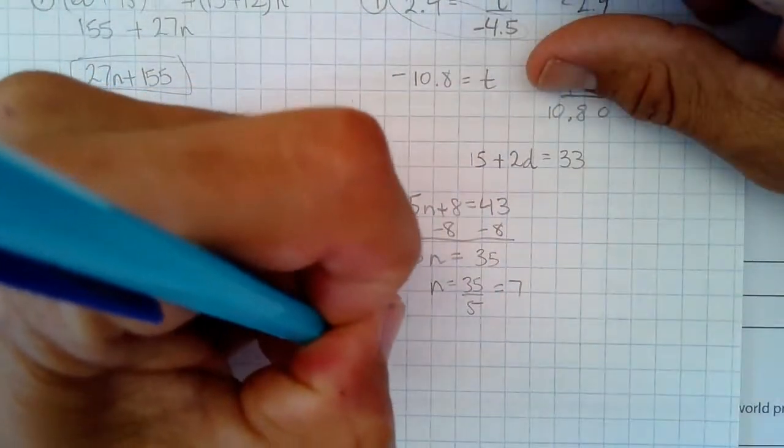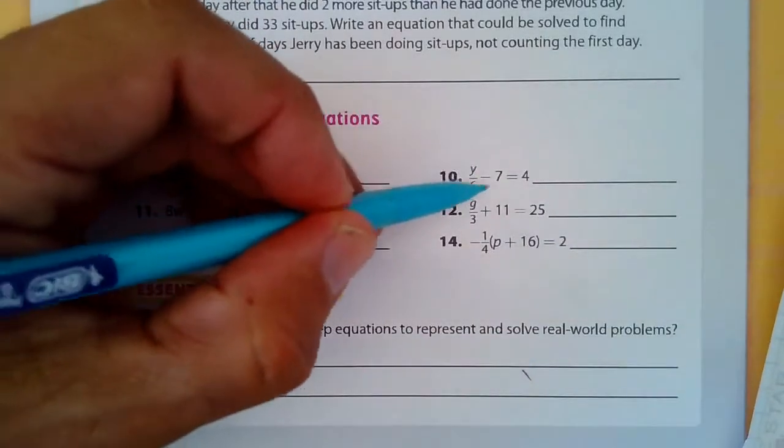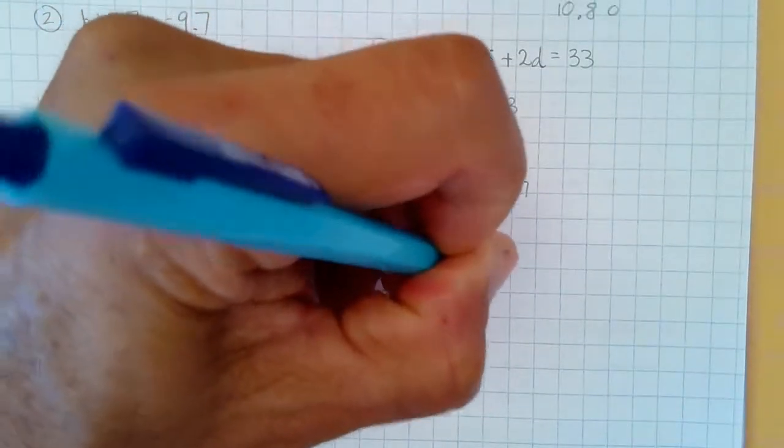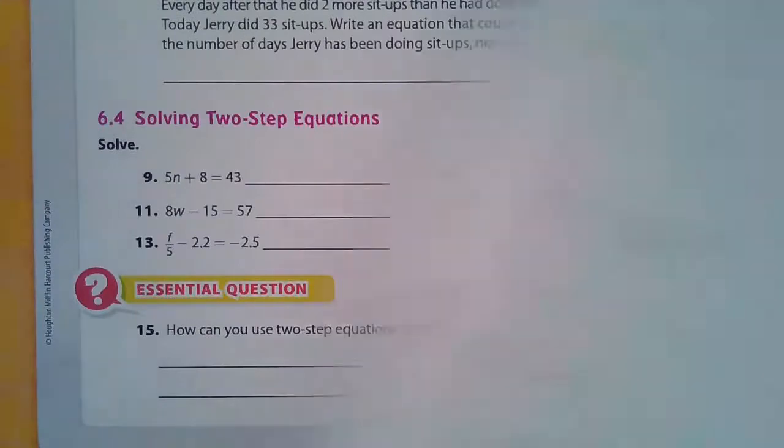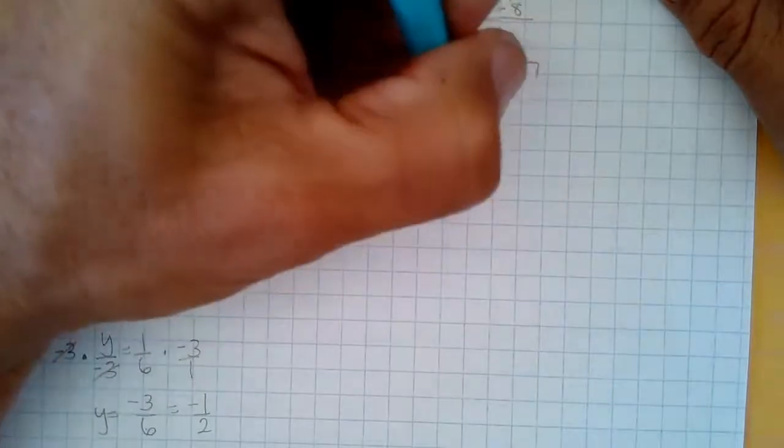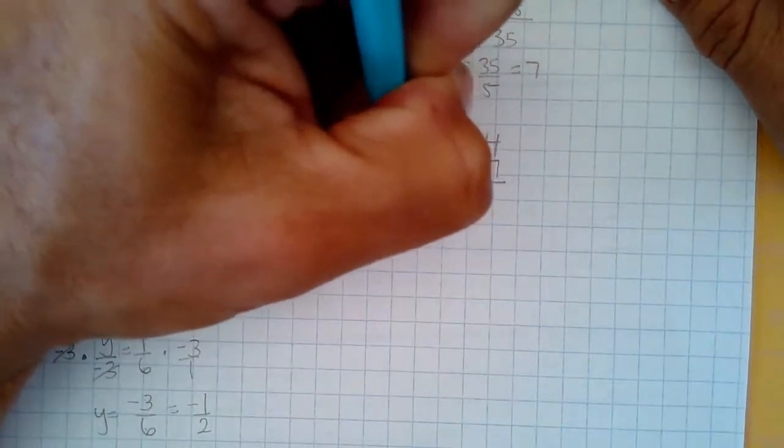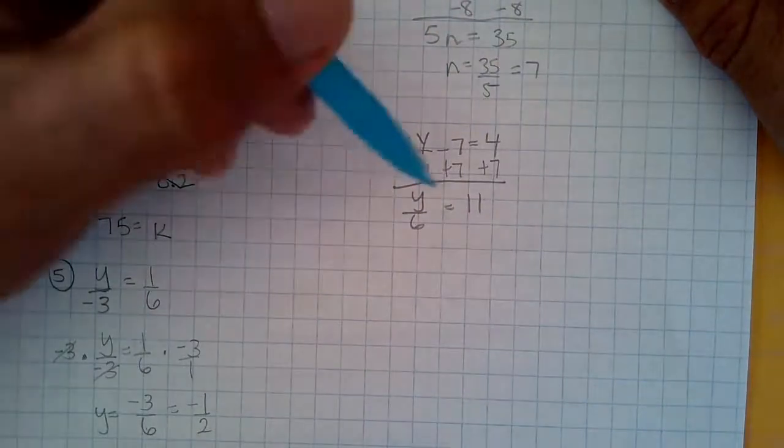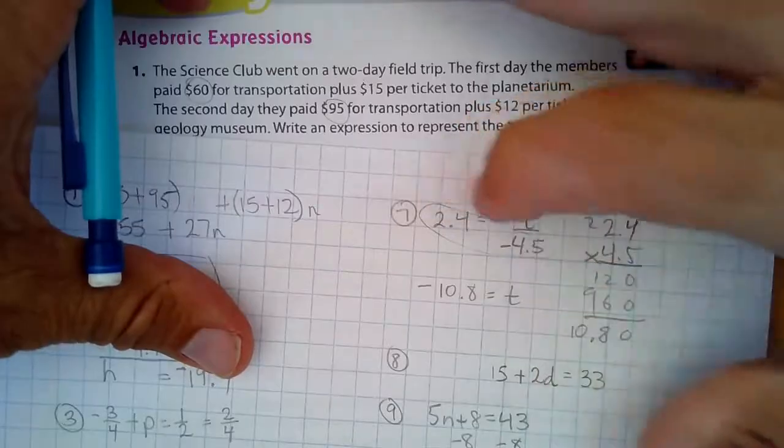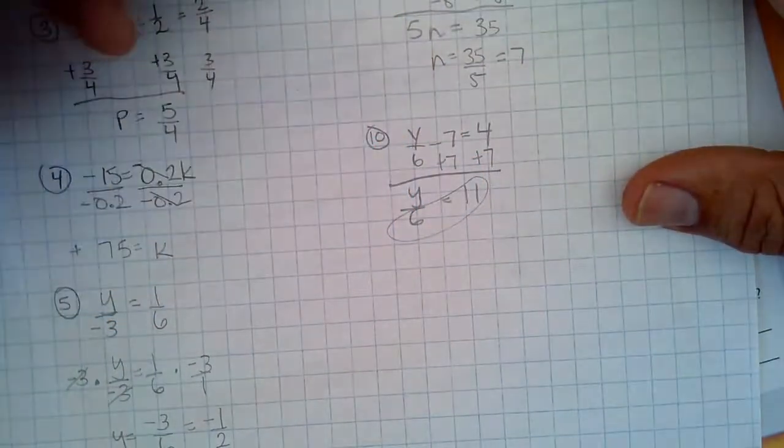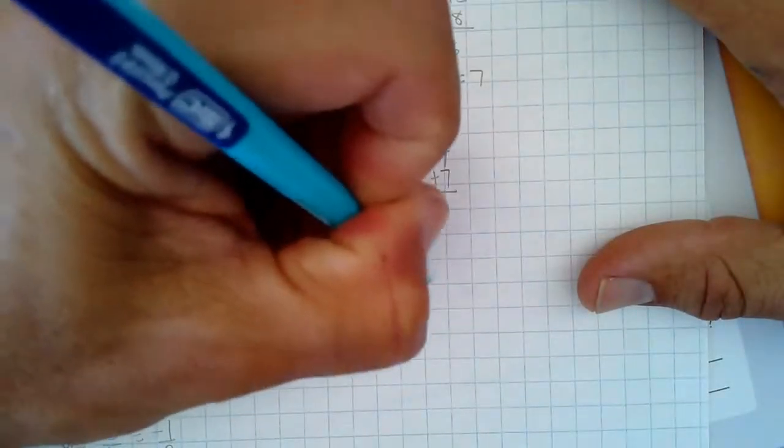Number 10, we have y over 6 minus 7 equals 4. I would add 7 to both sides. And that is y over 6 equals 11. And I would, like I saw up here, I'm just going to multiply them. I would do the same thing down here. I just multiply 6 times 11, and that y is going to be 66.